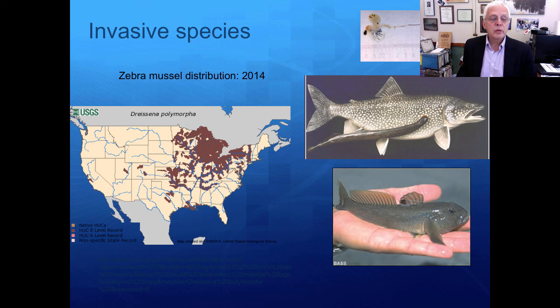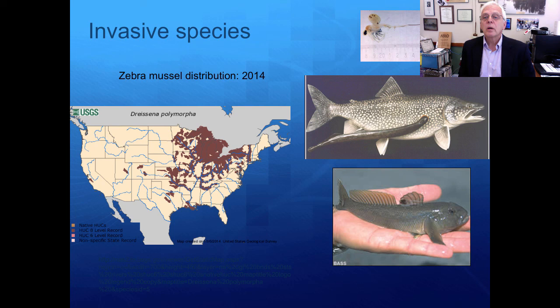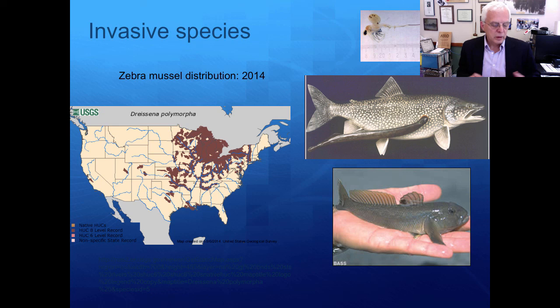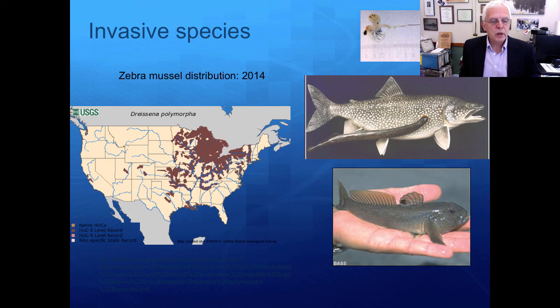Invasive species have been transported by stream connectivity. The distribution of Dreissena polymorpha — the zebra mussel — as of 2014 shows it moving up along river corridors across the United States. Other invasives include the slimy sculpin, lampreys, and Bythotrephes. There is a constant conflict between the desire for upstream migration of naturally healthy organisms and blocking the migration of ones that will destroy ecosystems.